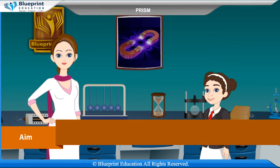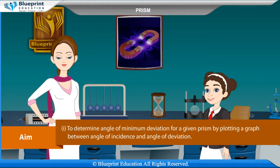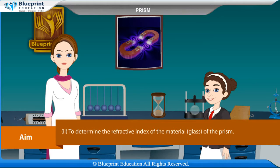Our aim here is to determine angle of minimum deviation for a given prism by plotting a graph between angle of incidence and angle of deviation, and to determine the refractive index of the material glass of the prism.